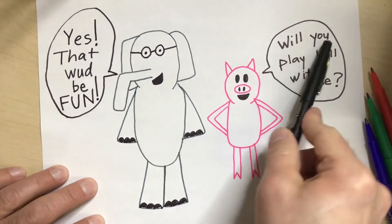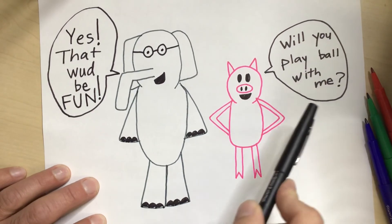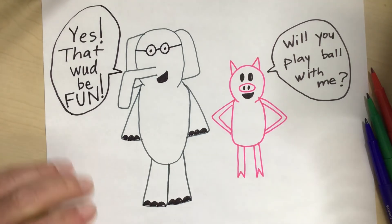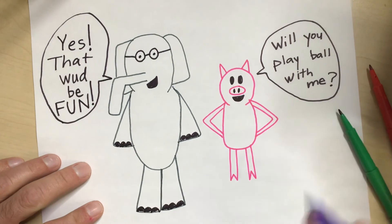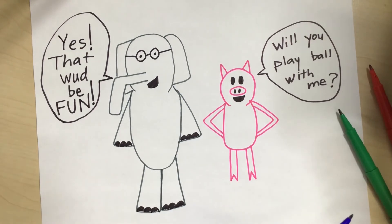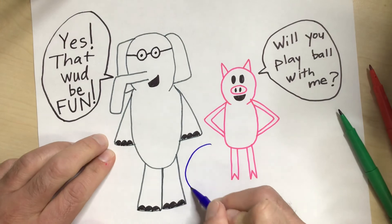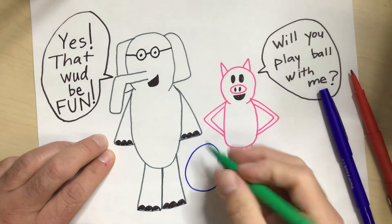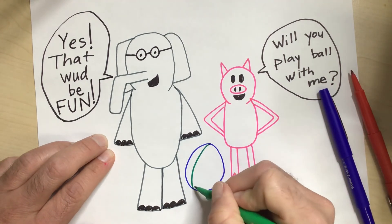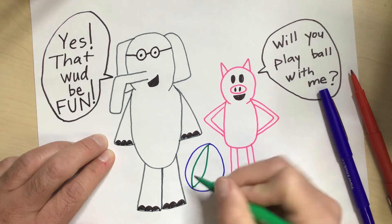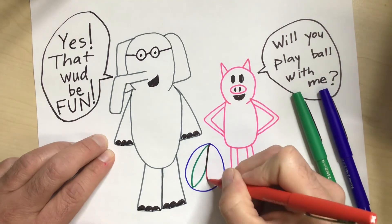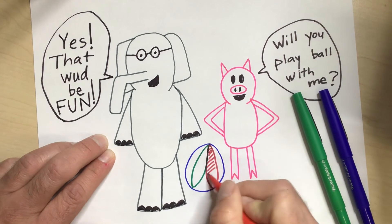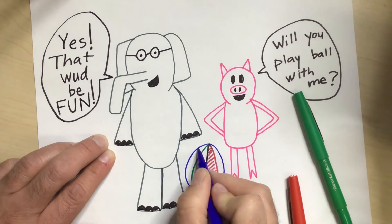So there's Piggy saying, will you play ball with me? And then Gerald says, yes, that would be fun. And then, you know what might be nice to add to this picture? Because they're talking about it, we could add a ball for them to play with. And it had some green on it. And it had some red on it, too. Now I'll color it in to look like it. And there I'm really working on my story.